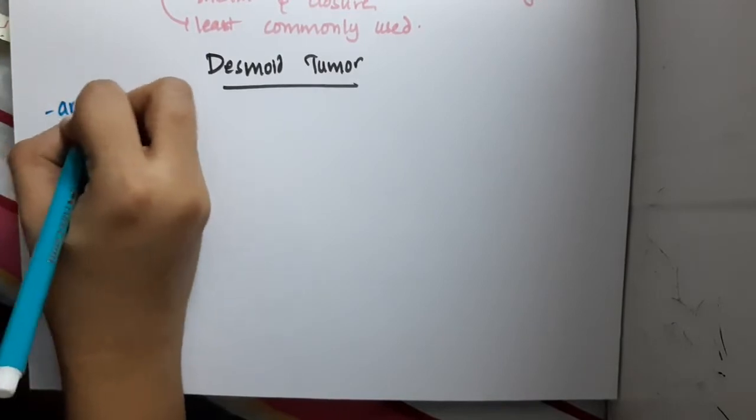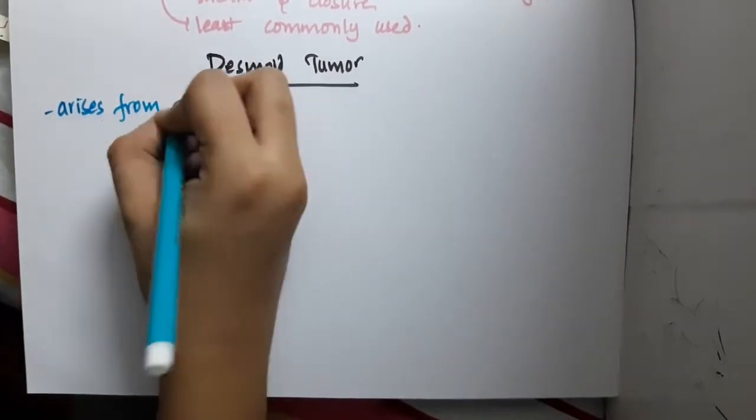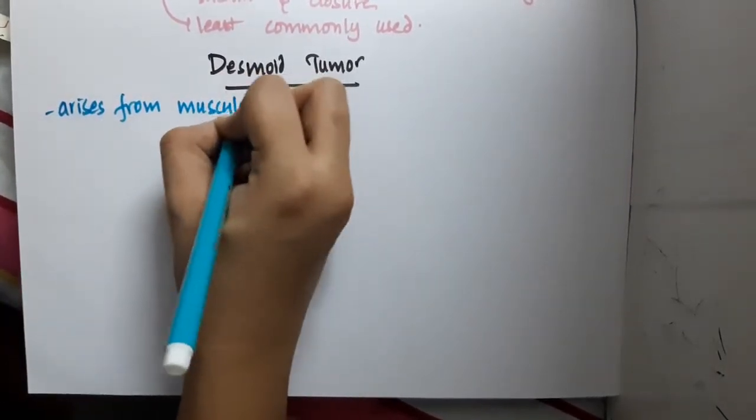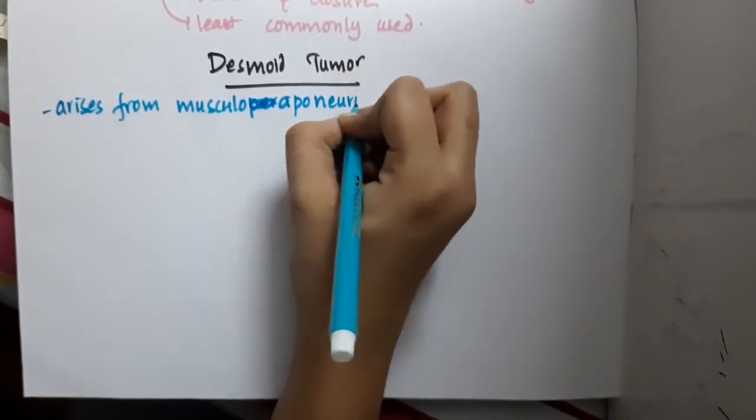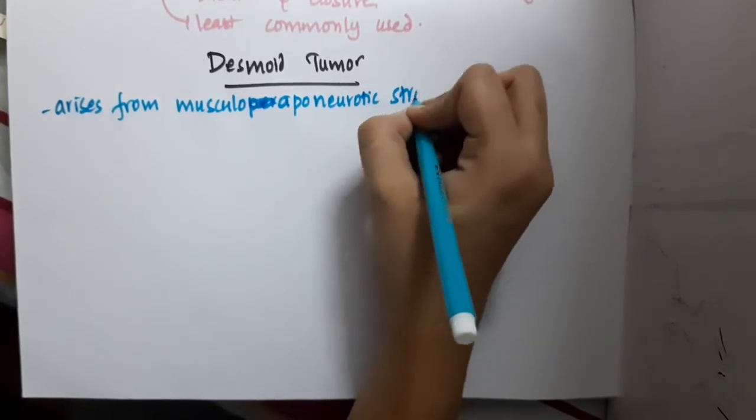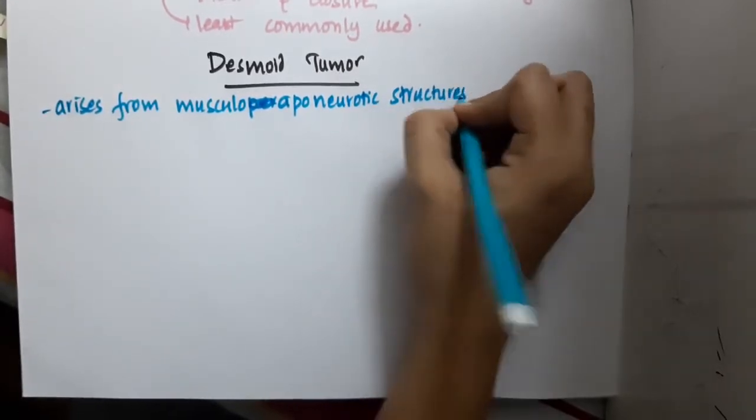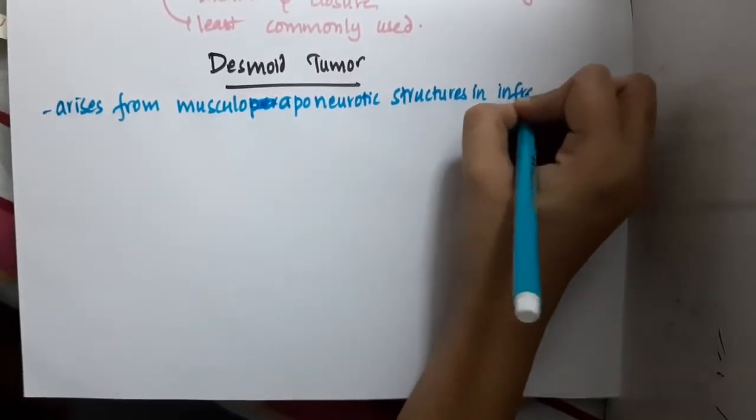This Desmoid tumor mainly arises from musculoaponeurotic structures in the infraumbilical region.